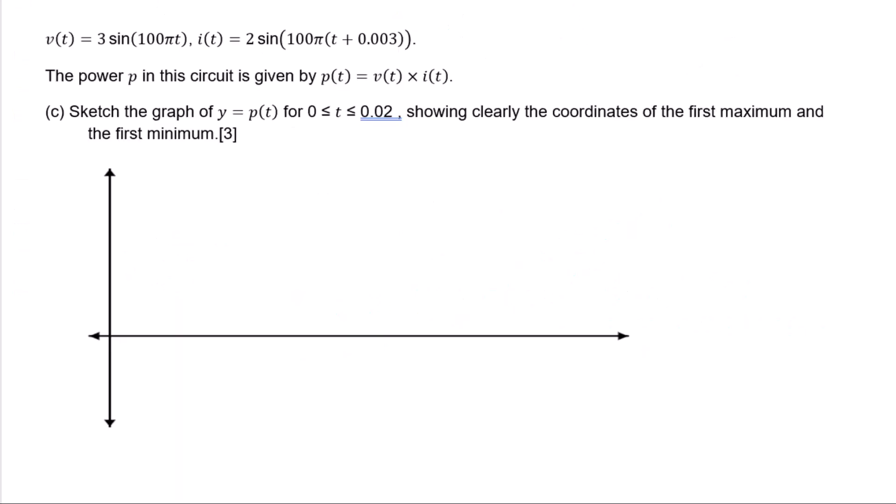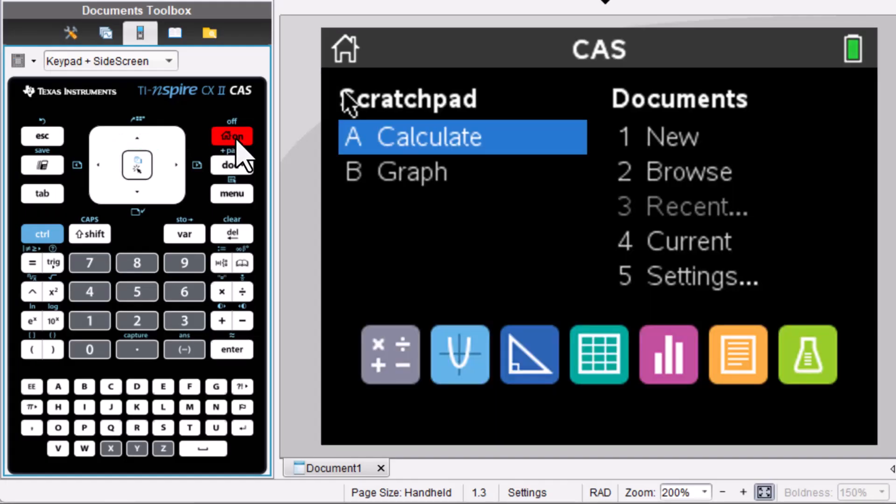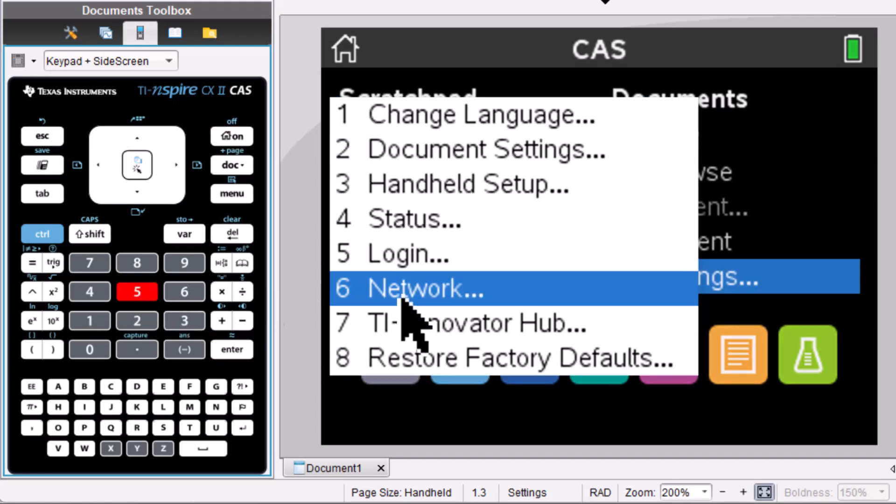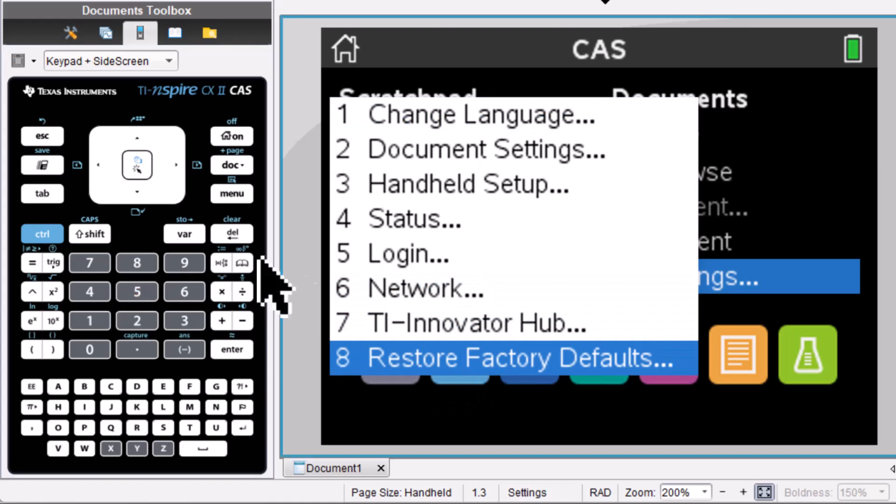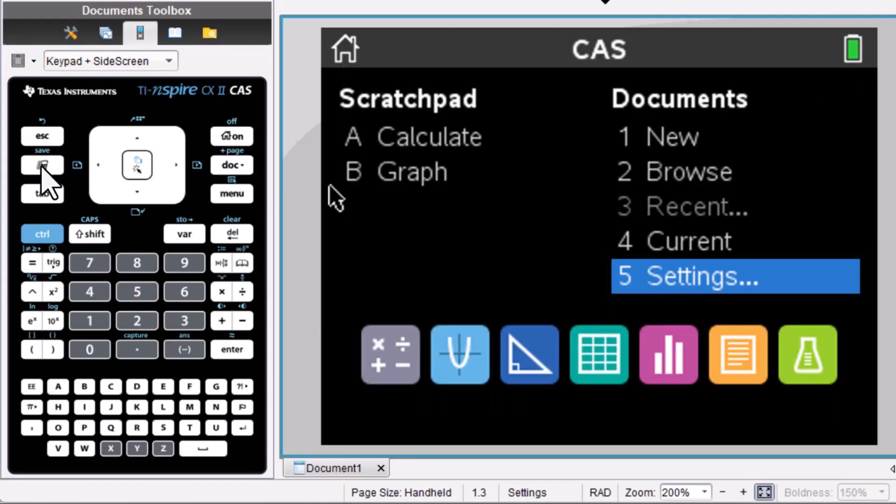Power p in this circuit is given by p(t) = v(t) × i(t). Sketch the graph of y = p(t) for 0 ≤ t ≤ 0.02, showing clearly the coordinates of the first maximum and the first minimum. Go to graphing calculator. Go to 5. Restore factory default. Then go to this scratchpad.